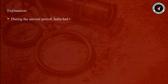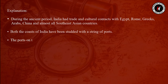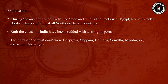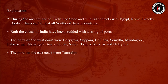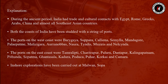The answer is Option A. During the Gupta dynasty period, Ghantashala, Kadura, and Chaul were known as ports handling foreign trade. During the ancient period, India had trade and cultural contacts with Egypt, Rome, Greeks, Arabs, China, and almost all Southeast Asian countries. The ports on the east coast included Tamralipti, Charitrapur, Paluru, Dhantapur, Kalingapatnam, Pithunda, Ghantashala, Kadura, Poduka, Puhar, Korkai, and Kamara.